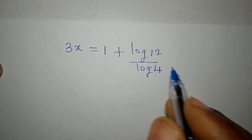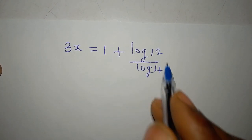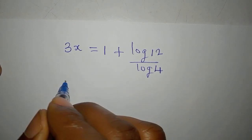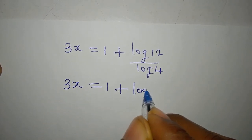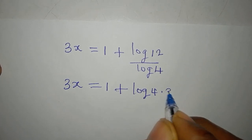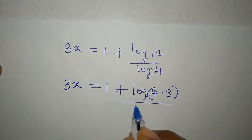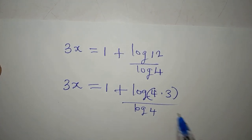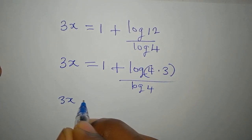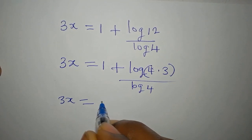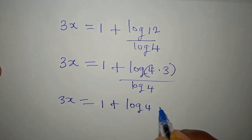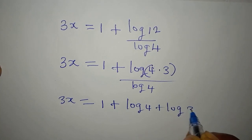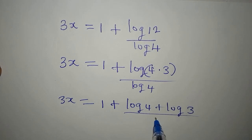We can equally break this further. We have 3x equals 1 plus log(4 × 3) over log 4, since 12 is 4 times 3. Expanding gives 3x equal to 1 plus log 4 plus log 3, all over log 4.